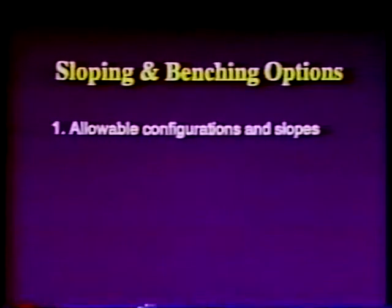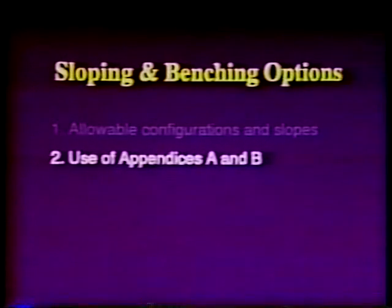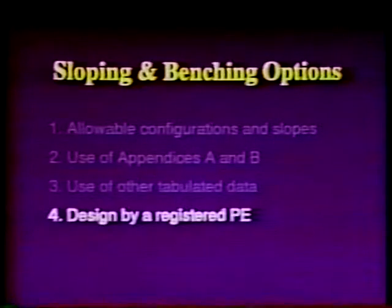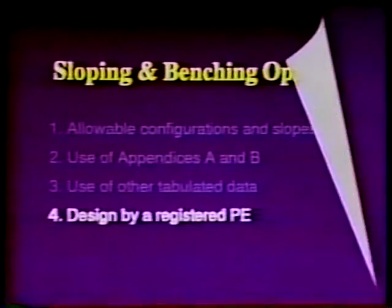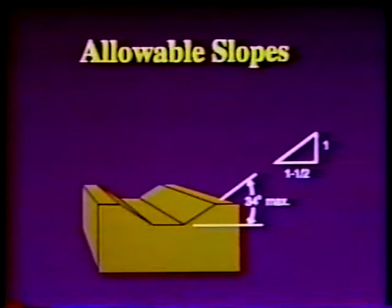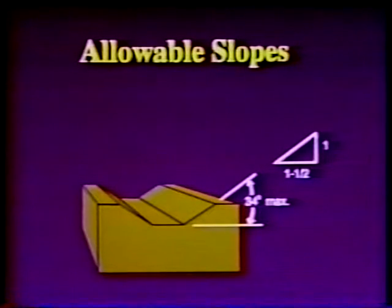The use of either of these categories of protective systems requires the choice of one of four design options. The options for sloping and benching systems include: allowable configurations and slopes, the use of appendices A and B, designs using other tabulated data, and design by a registered professional engineer. The first option specifies allowable configurations and slopes: any excavation less than 20 feet in depth may be sloped at an angle not steeper than one and one-half horizontal to one vertical, 34 degrees measured from the horizontal. Such slopes meet OSHA's requirements for worst-case soils, type C, as defined in 29 CFR 1926 Subpart P Appendix A.